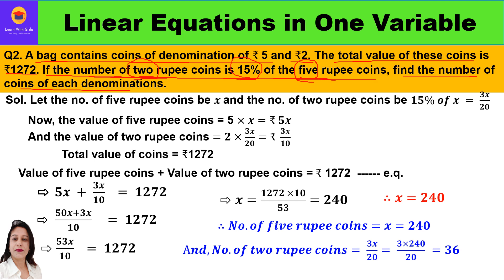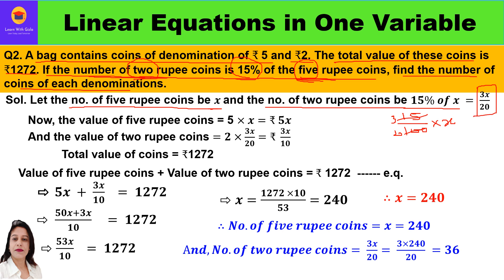We will start our solution by assuming: let the number of 5-rupee coins be x. Now the number of 2-rupee coins is 15% of x. To solve this, 15 divided by 100 times x — when you remove the percent sign you divide by 100, and 'of' means multiplication — so 15 upon 100 times x. Simplifying by dividing by 5, we get 3x by 20. So the number of 2-rupee coins is 3x by 20.